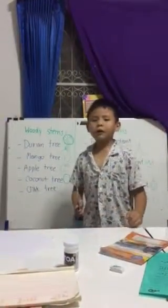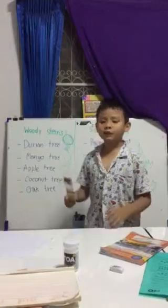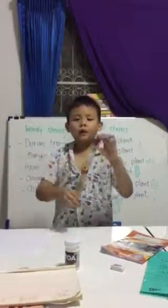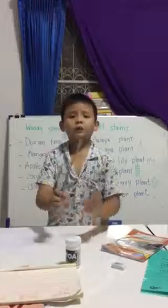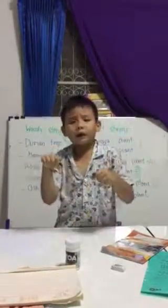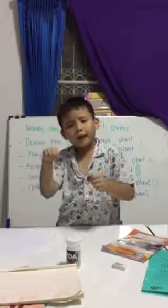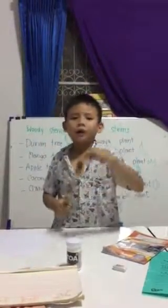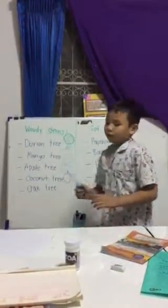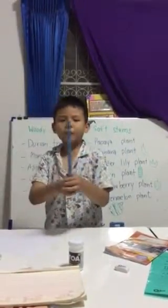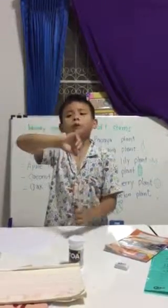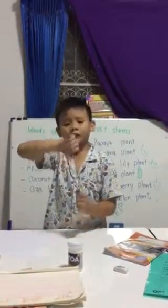What is a woody stem? Woody stem means like a big tree where the wood cannot break. Soft stems means like a sunflower — you can break the stem.